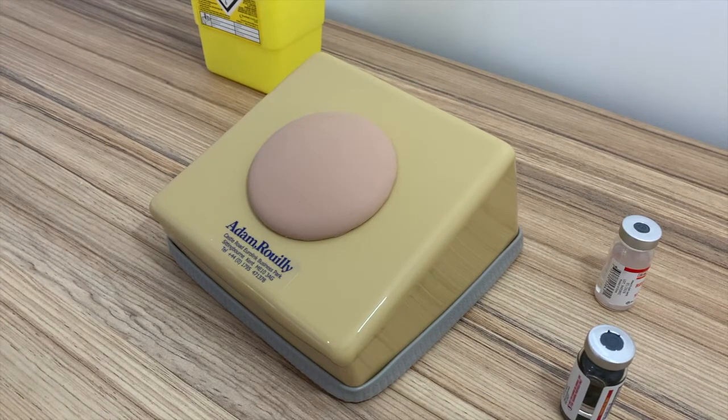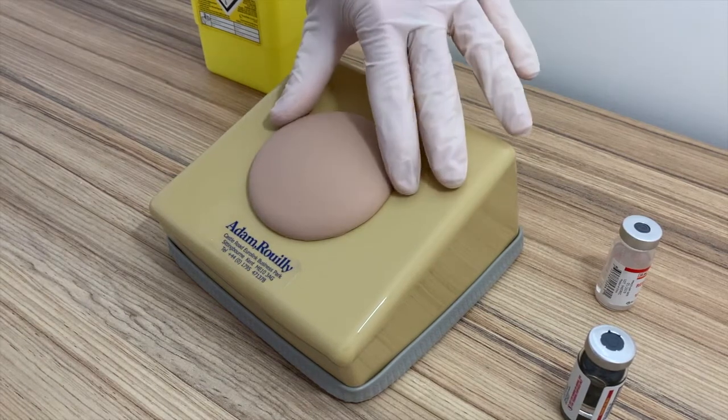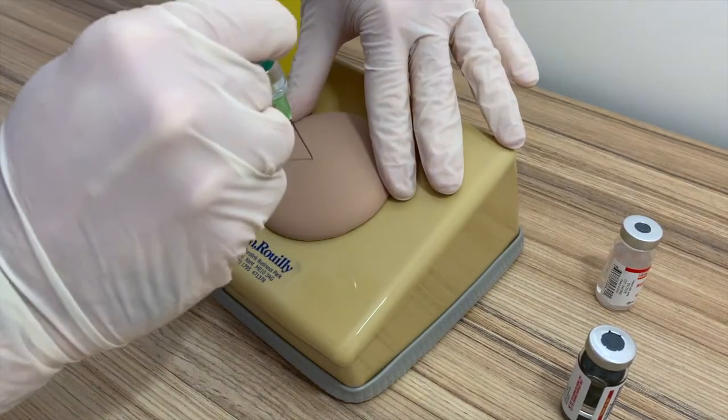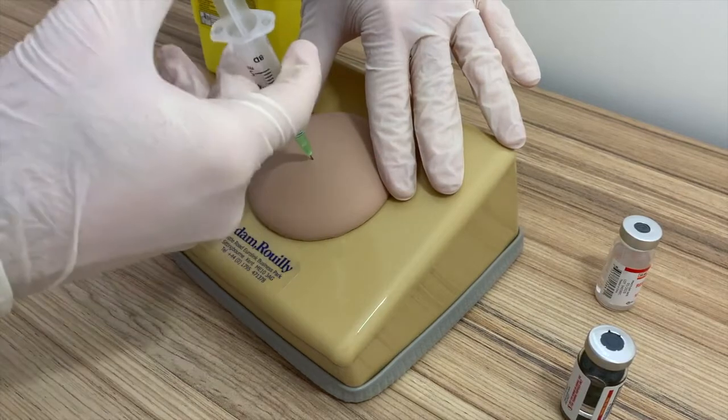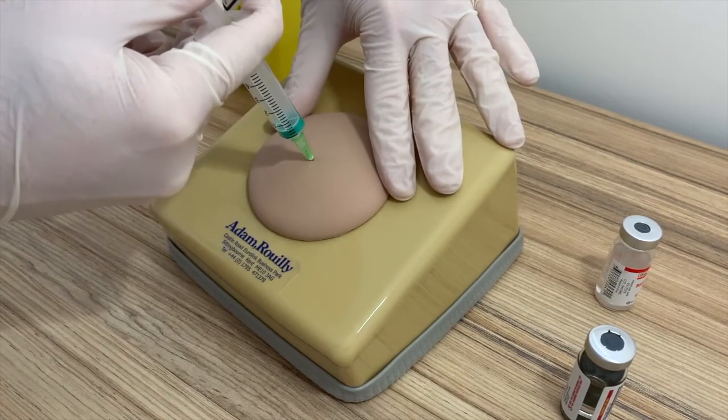I'm going to assume that this is the deltoid region of the patient's arm and administer the intramuscular injection into there. And the model does accept fluids, so I can ensure that goes deep into the muscle.